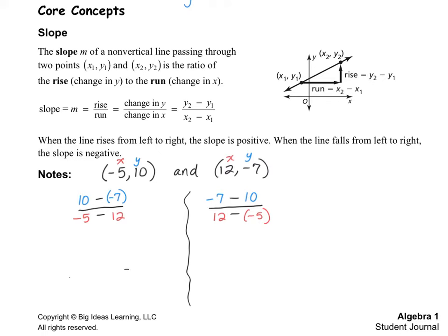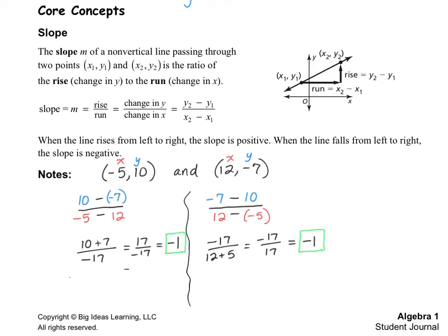10 minus negative 7 changes to 10 plus 7, and negative 5 minus 12 is negative 17. So this is positive 17 over negative 17, which simplifies to negative 1. The other way: negative 7 minus 10 is negative 17, and 12 minus negative 5 is positive 17, which also reduces to negative 1. In both cases we get the same answer — it doesn't matter which point you start with as long as you are consistent in the numerator and denominator.